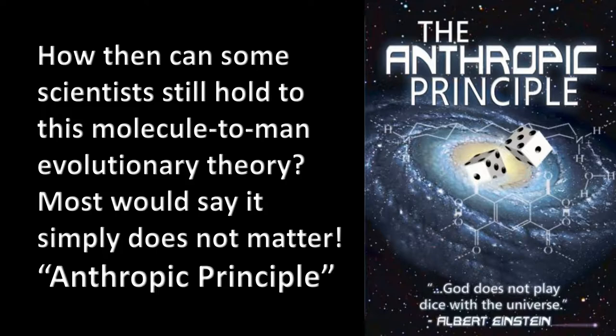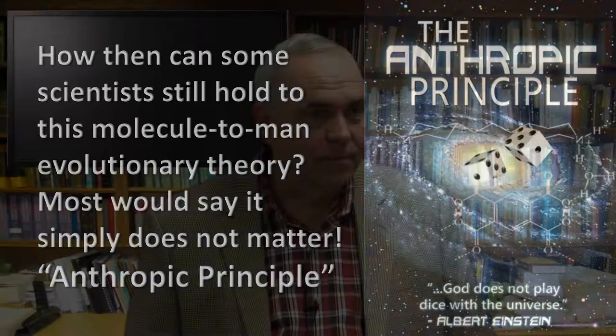How then can scientists still hold to molecules-to-evolution theory? Most would defer to the anthropic principle. Basically, the anthropic principle says it occurred because it had to occur — we're here, aren't we? So it doesn't matter how improbable it is; the fact that we're here means it happened that way. You could say it's one in a trillion, one in a trillion trillion — doesn't matter, we're here. To me that's a cop-out. They say the anthropic principle explains it; the laws of nature and the position of our solar system all fit perfectly.